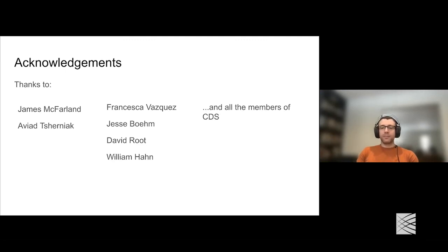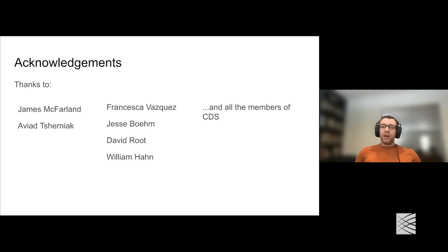Thanks so much Josh for a really clear and thought-provoking talk. Ben has posted another question: is Kronos relevant to Perturb-seq data as well? Kronos only works on viability phenotypes. For Perturb-seq you might be interested in some intermediate model that predicts viability from changes in transcription, but really you'd probably want a model oriented around the much richer, larger phenotype readout you're getting from Perturb-seq. So I wouldn't use Kronos for that.